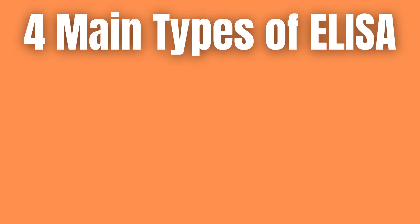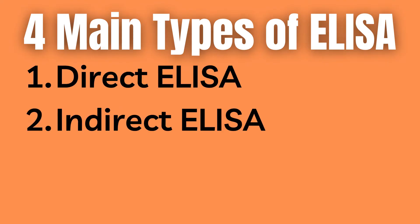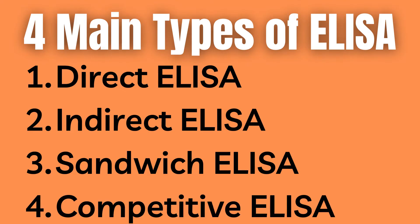There are four main types of ELISA: direct ELISA, indirect ELISA, sandwich ELISA, and competitive ELISA.